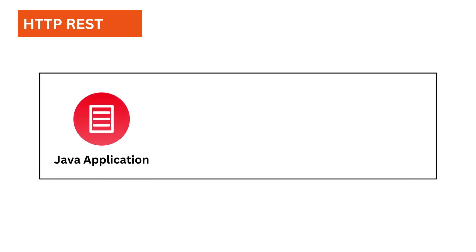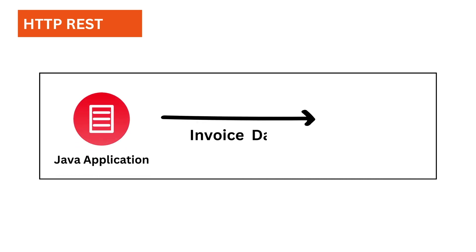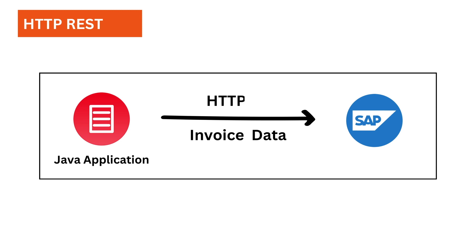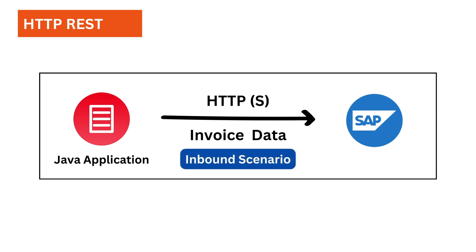Let's take an example. We have a Java application that is running externally and it's processing some invoice data. This application wants to load final invoices to SAP. For this, the Java application can use HTTP as a protocol to load the data into SAP.